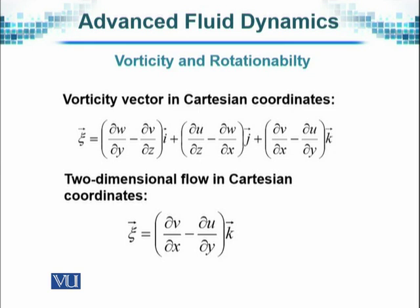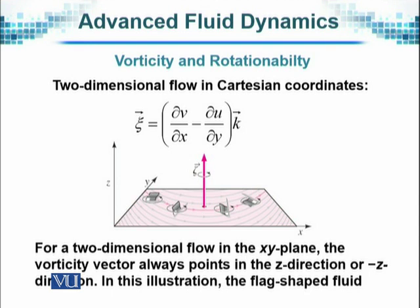These terms are very cyclic and symmetric. For two-dimensional flow, if the fluid is not three-dimensional, then zeta in the z direction will be the partial derivative of v with respect to x minus the partial derivative of u with respect to y. Attempting to show a physical description: these things are interrelated — there is mathematics, physics, and a visual part. For a two-dimensional flow in the XY plane, the vorticity vector always points in the z or minus z direction.